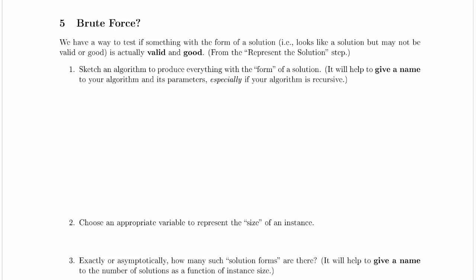So we're going to sketch an algorithm to produce everything with the form of a solution, so everything that looks like a solution but may not actually be valid or good, it says up here. In this particular case, we already noted that valid is kind of a nice thing to stick with. Valid says that every woman is matched with exactly one man, and every man is matched with at most one woman. There might be men who aren't matched because we have extra men.